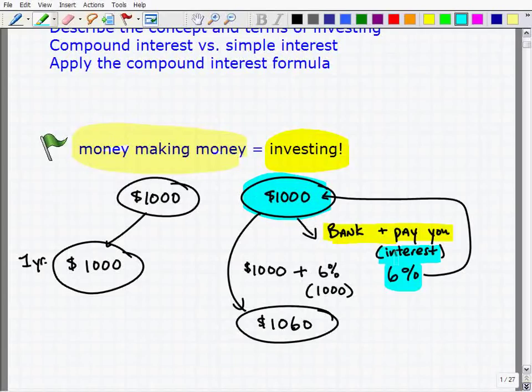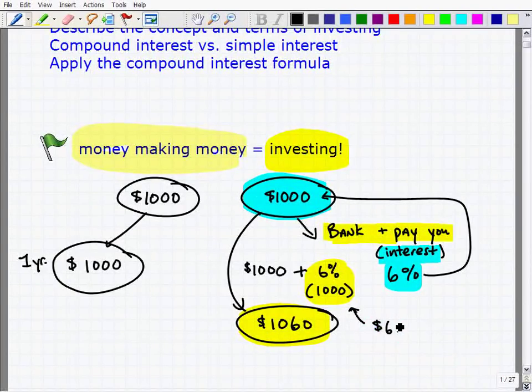Then you have your final amount that you've earned, sometimes people call this your return on your investment. And by the way, this $60 here, 6% of $1,000, sometimes that's also called yield. So there's a ton of different financial terms, but these are the basics.